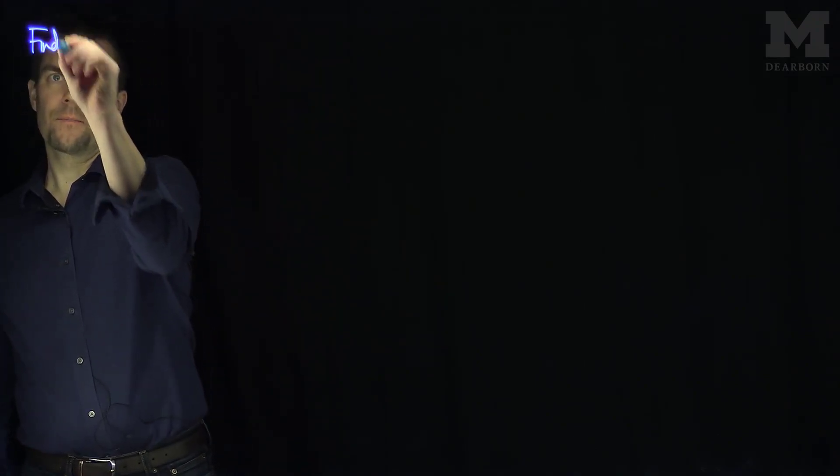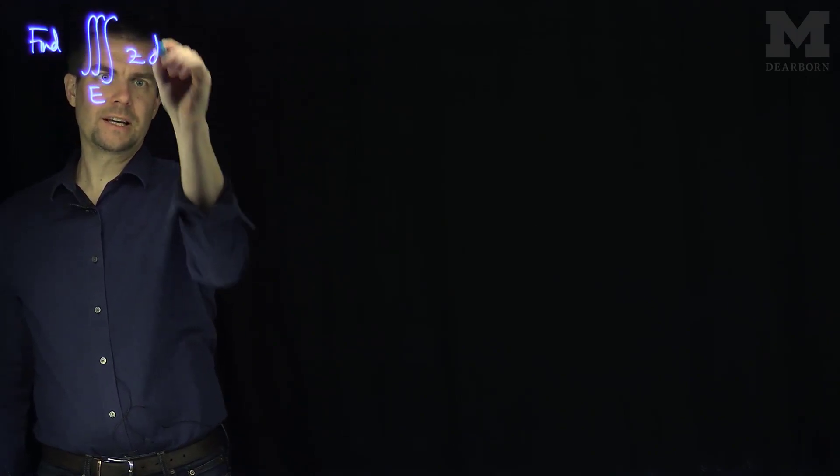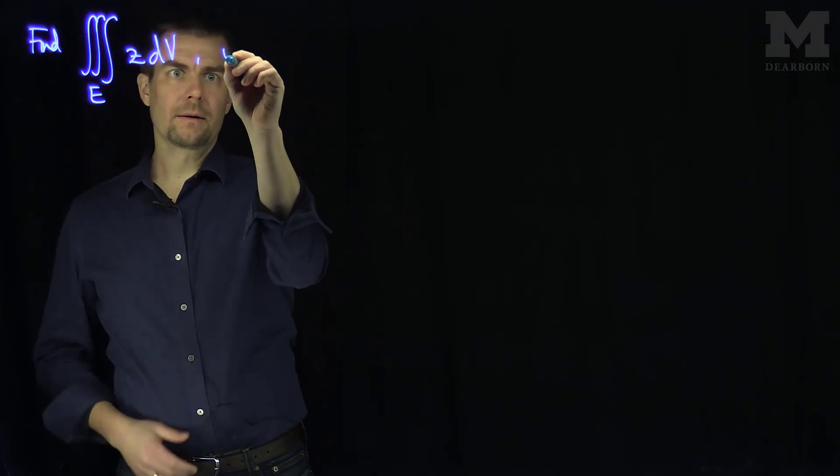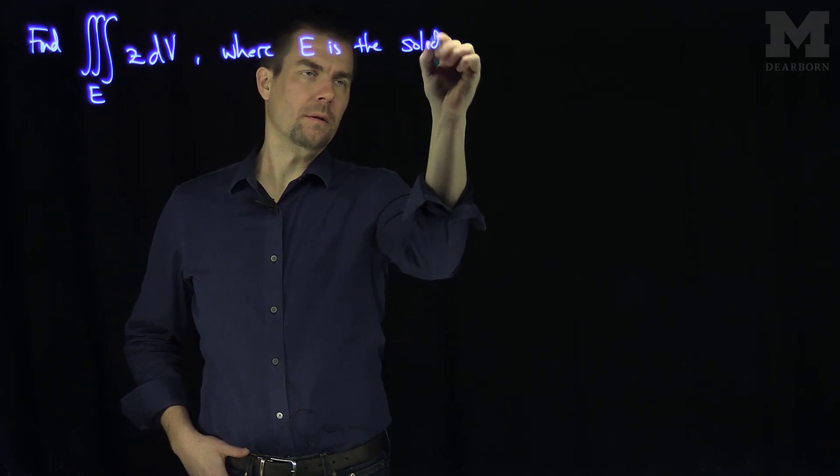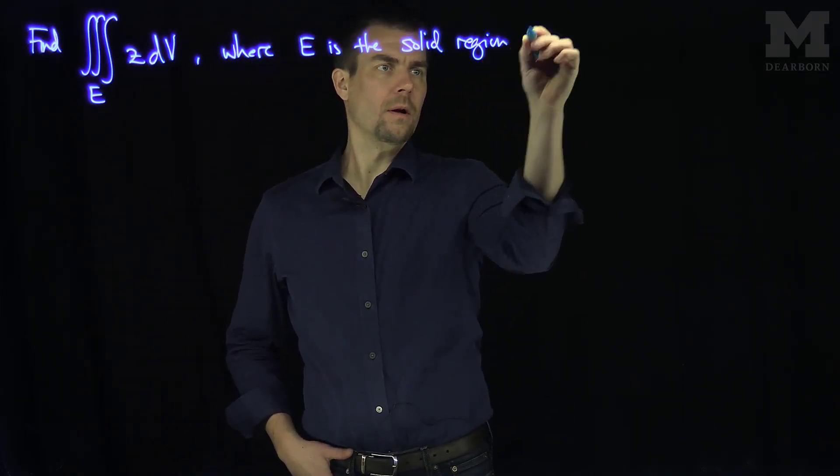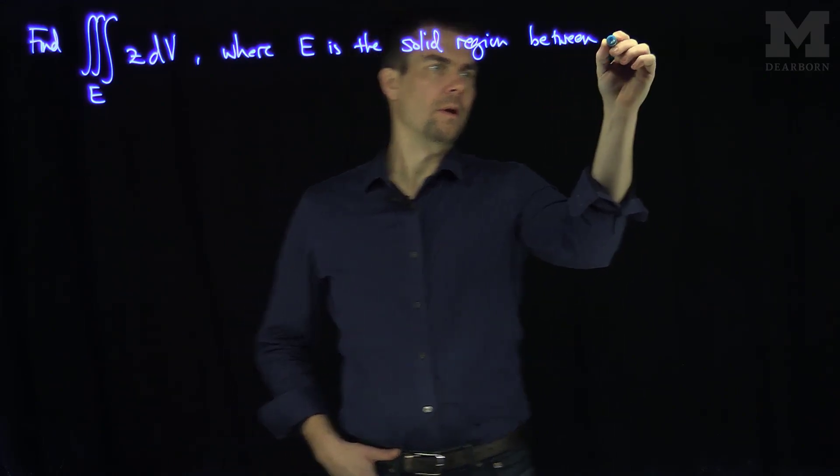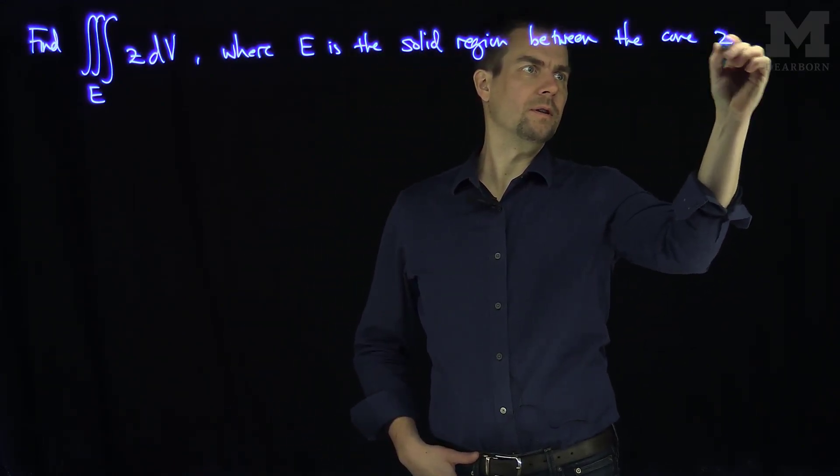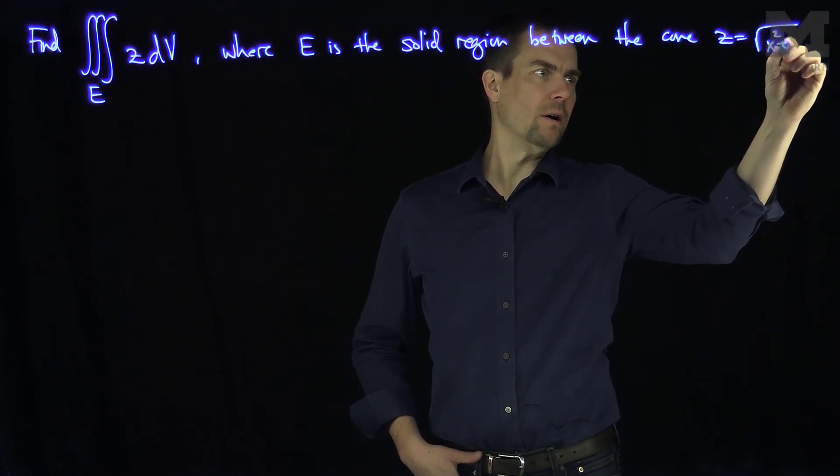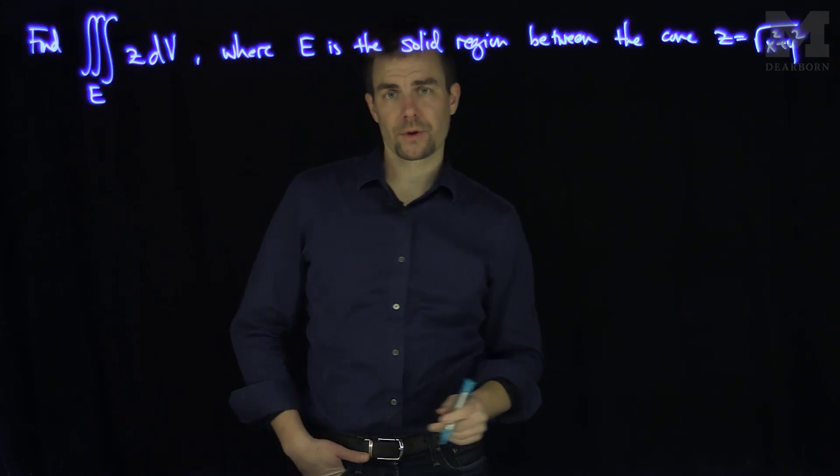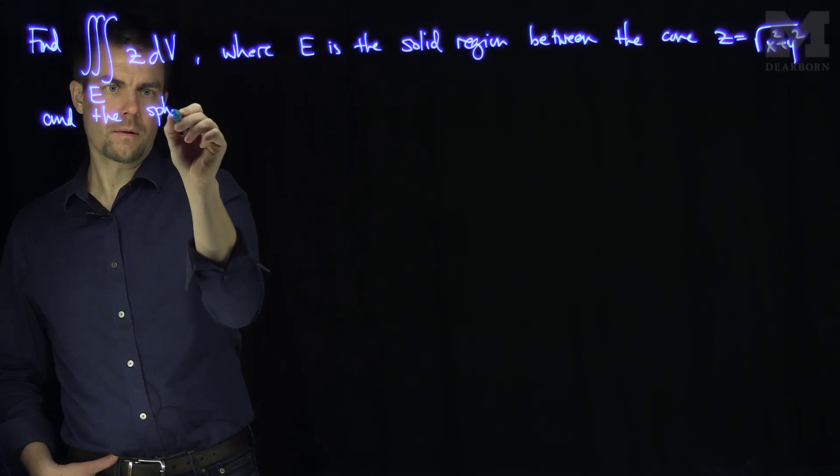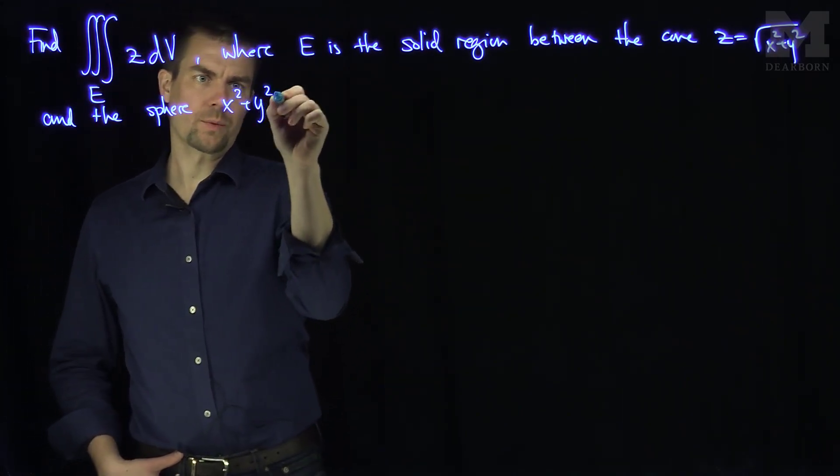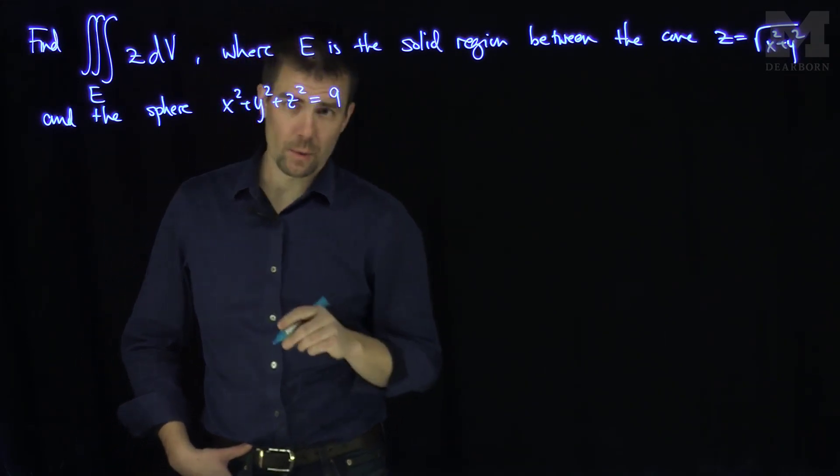Let's find the triple integral over a region E of Z dV, where E is the solid region between the cone Z equals square root of X squared plus Y squared. That's a right circular cone. And the sphere, X squared plus Y squared plus Z squared is equal to 9.